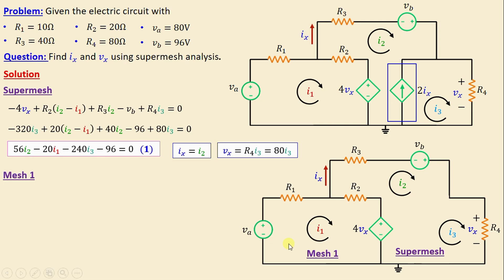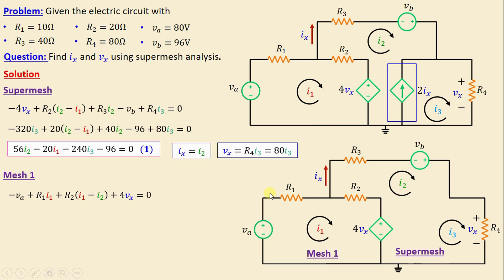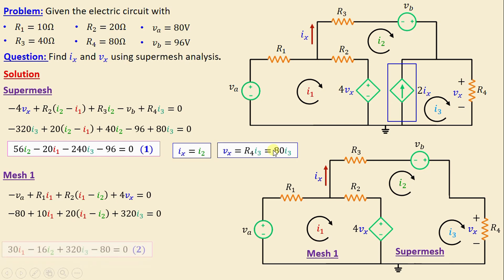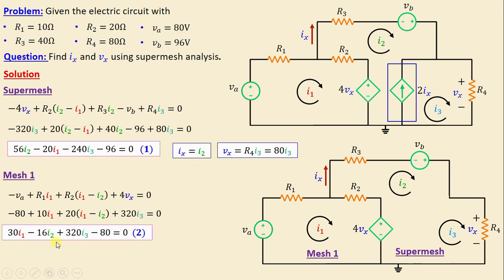Moving on to mesh one, applying KVL we write: negative VA plus R1·i1 plus R2(i1 − i2) plus 4vx equals zero. Replacing resistors and voltages with numerical values and substituting vx = 80·i3, we obtain: 30·i1 − 16·i2 + 320·i3 − 80 = 0. This is Equation 2.